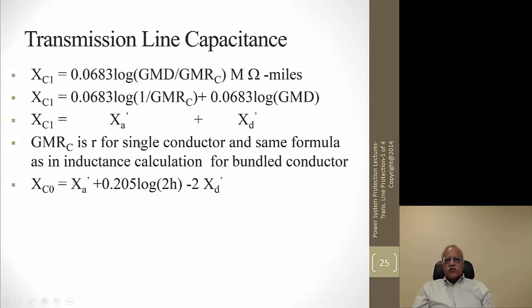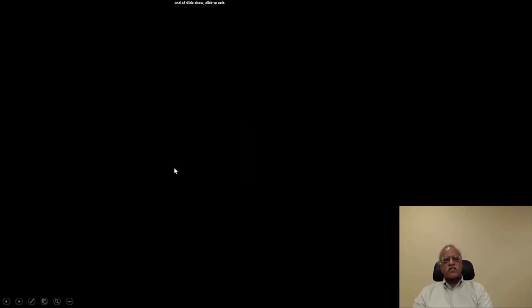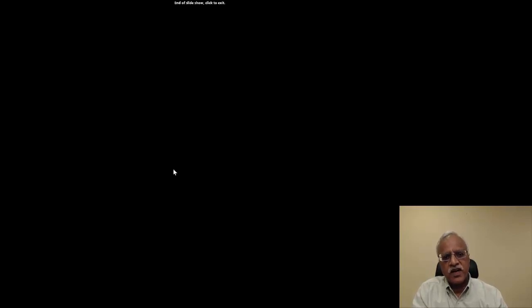The last parameter is capacitance, which is not used much in protection but is useful for calculating voltage rise on a transmission line. The formula is very similar to Coulomb's formula and is provided for reference. With this, we have covered the first portion — the parameters of the transmission line. The next three lectures will cover distance relays and their applications.